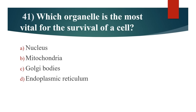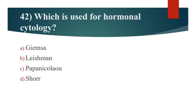41st question: Which organelle is the most vital for the survival of a cell? Option A: Nucleus. Option B: Mitochondria. Option C: Golgi bodies. Option D: Endoplasmic reticulum. Answer is Option A: Nucleus.